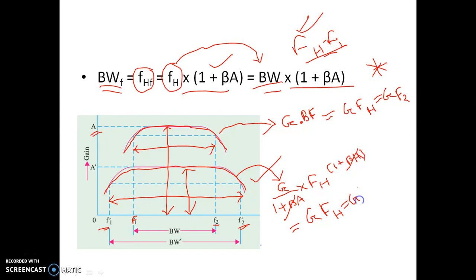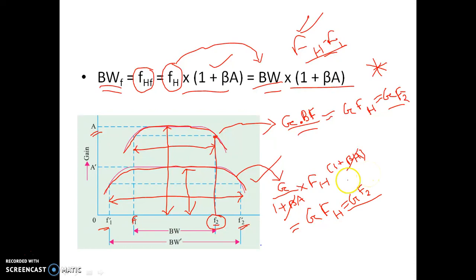That is equal to G × F2, because FH, the higher cut-off frequency without feedback, is basically equal to F2. So for both cases the gain bandwidth product is G × F2. We get a very important conclusion: because of application of negative feedback, although gain changes and bandwidth changes, the gain bandwidth product remains constant.